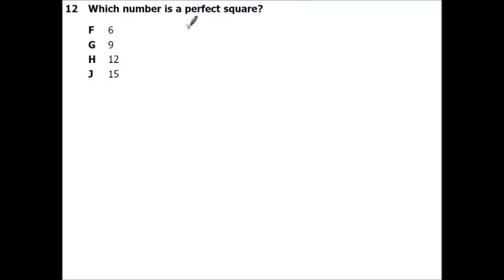Which number is a perfect square? That is going to be 9. Okay. Nothing times itself is 6. Nothing times itself is 12. Nothing times itself is 15. And 3 times 3 is 9.